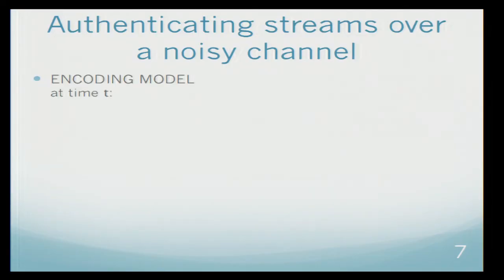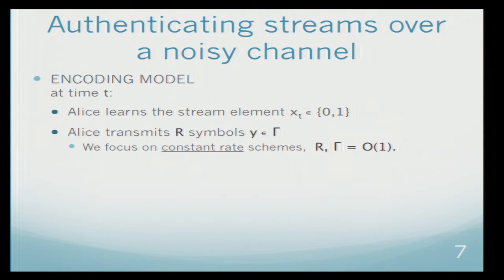Let me be slightly more formal about the model. Our encoding model is the following. At time t, Alice learns some bit of the stream and then she transmits r symbols from some alphabet that I call gamma. We will focus only on constant rate schemes, so we want r and the size of the alphabet gamma to be constant.